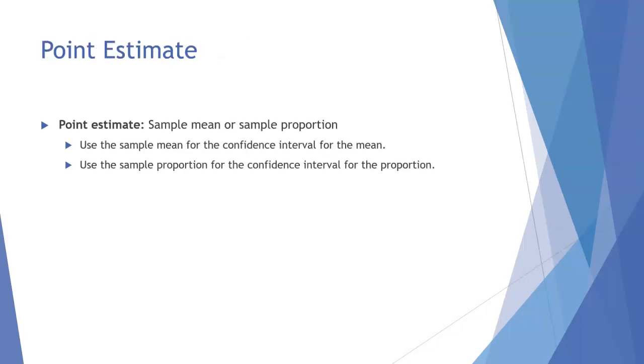So what is a point estimate? A point estimate is purely just the sample mean or the sample proportion. We use the sample mean if we're doing the confidence interval for the mean. We use the sample proportion if we're doing the confidence interval for a proportion.